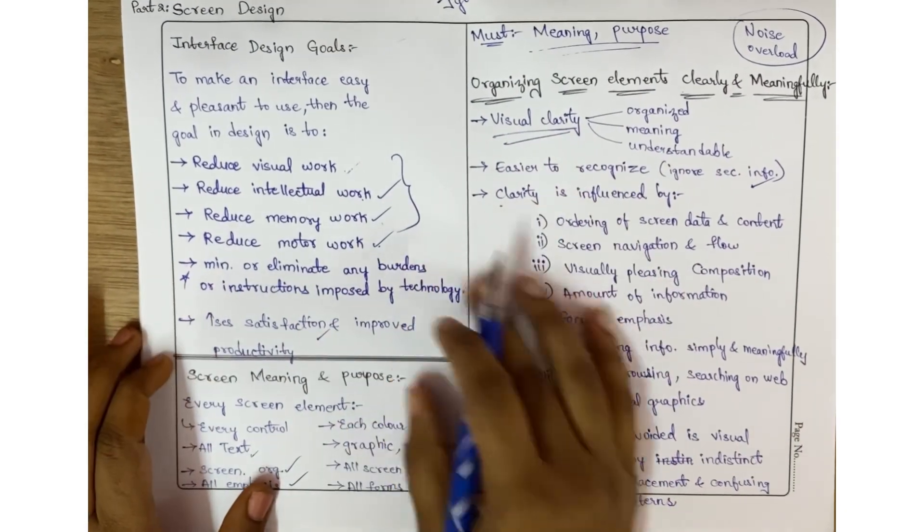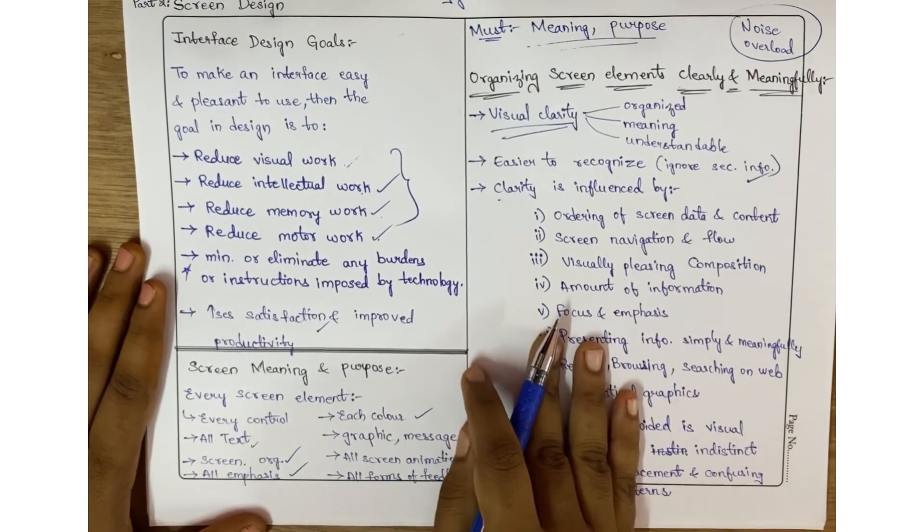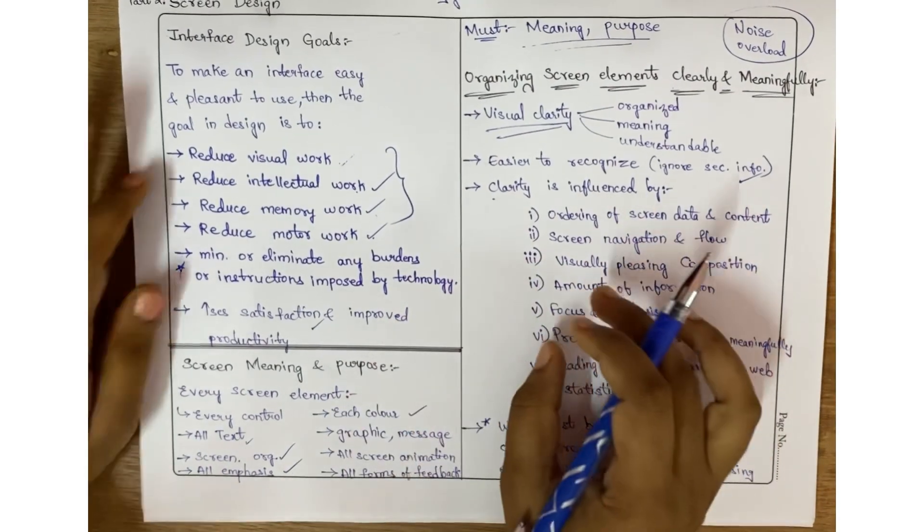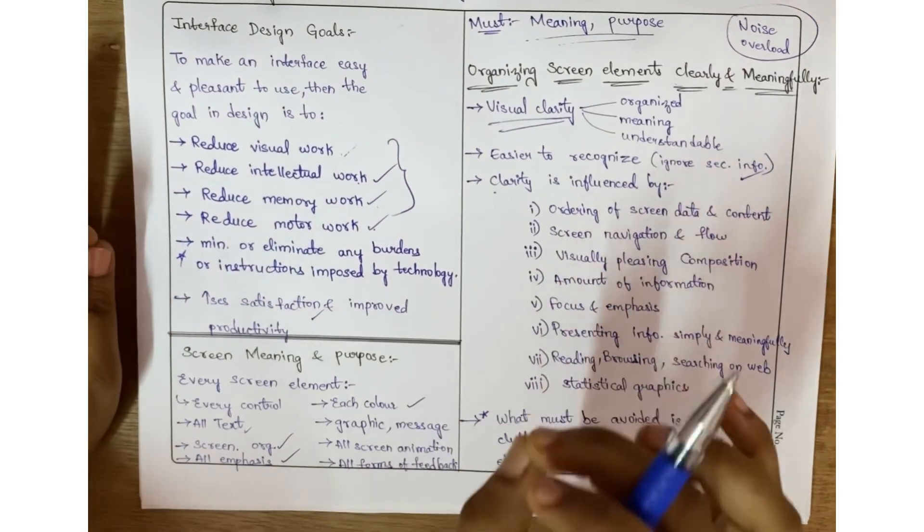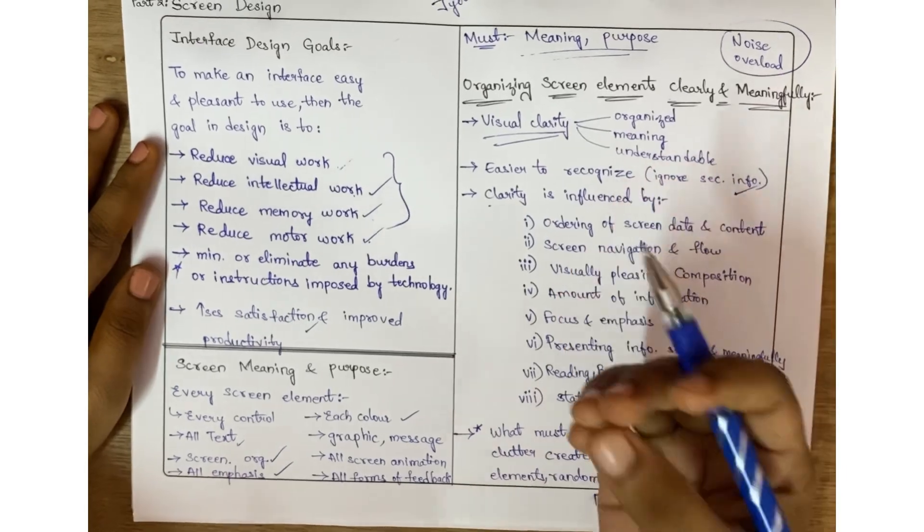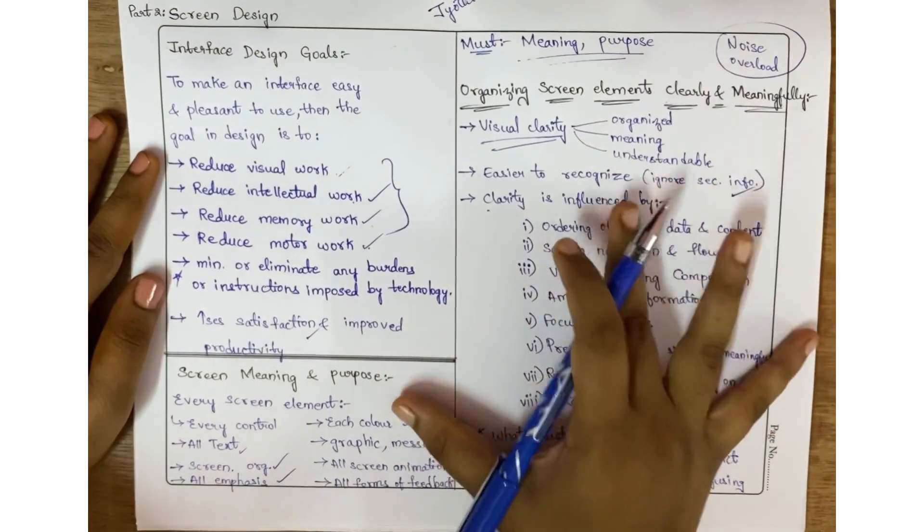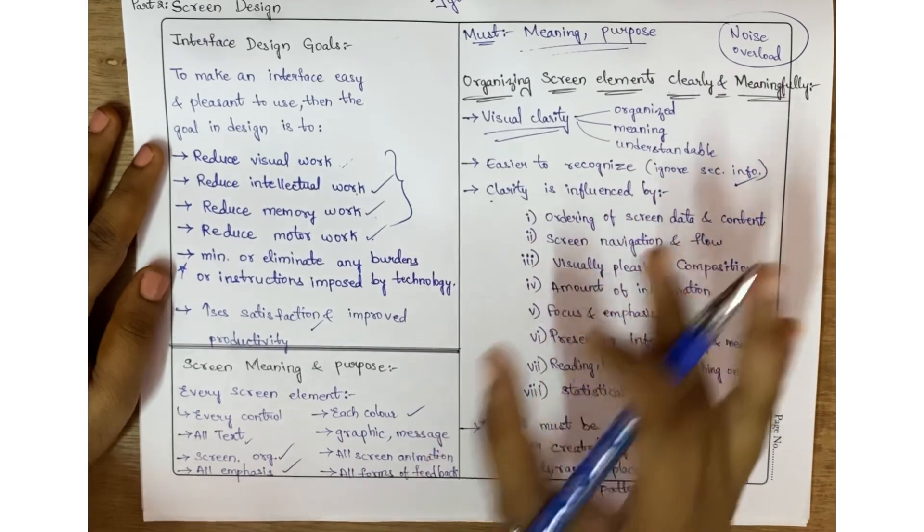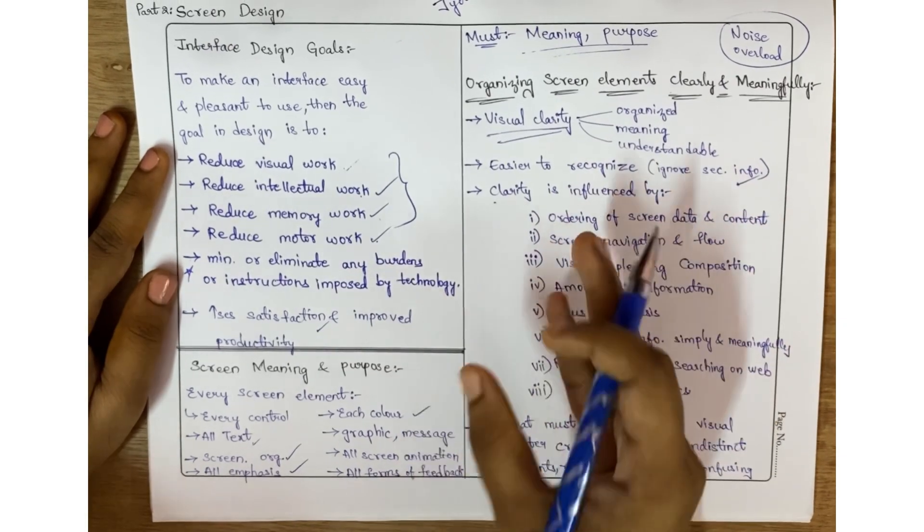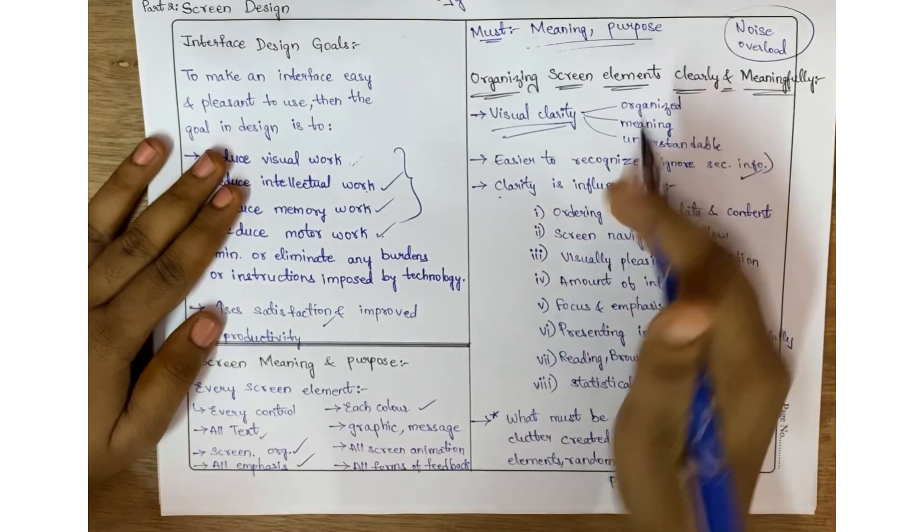Coming to the next topic: screen meaning and purpose. This is very simple - all screen elements in the interface must give some meaning and should be there for some purpose. If there is no purpose or meaning, it's a waste to put that screen element on the screen. It's like noise data.